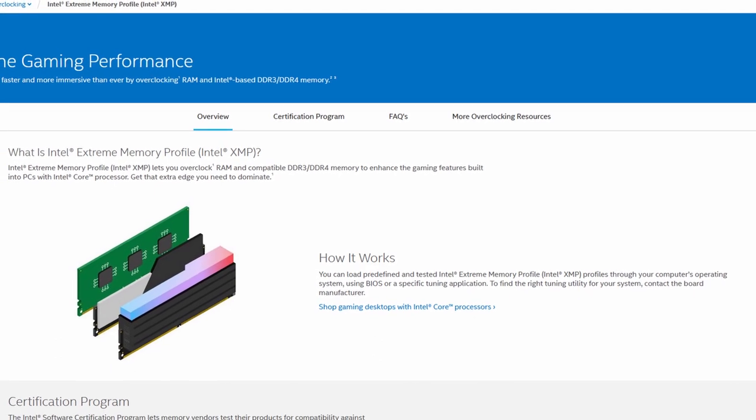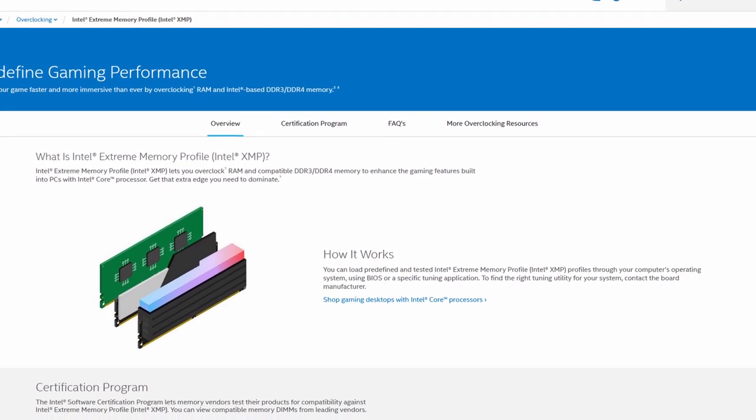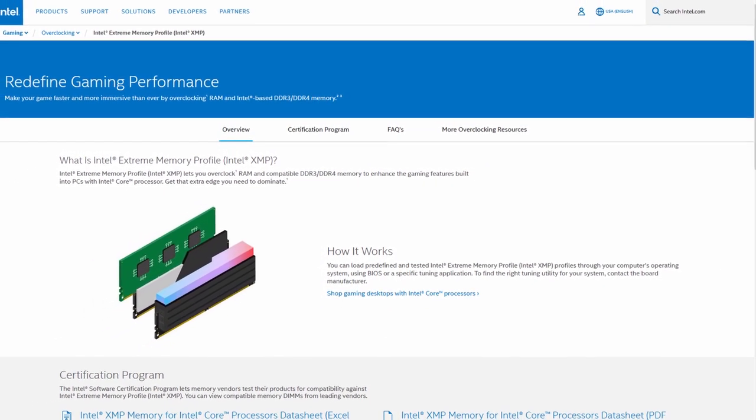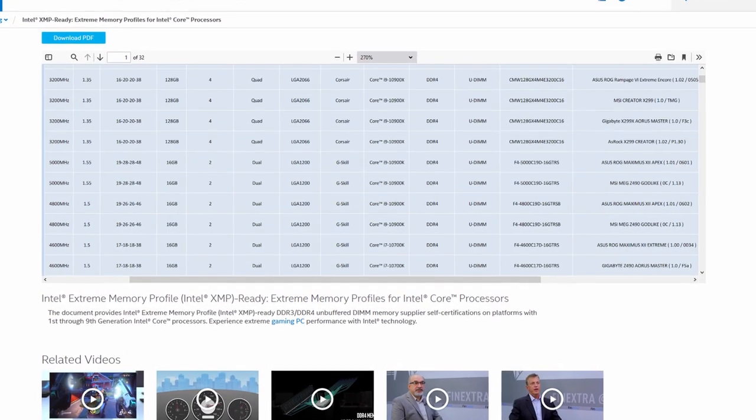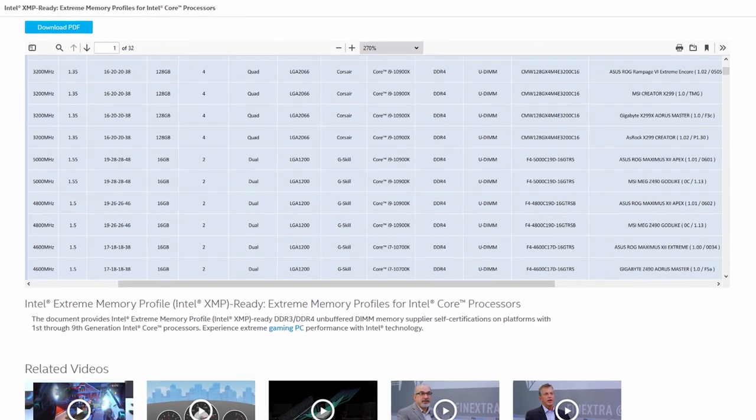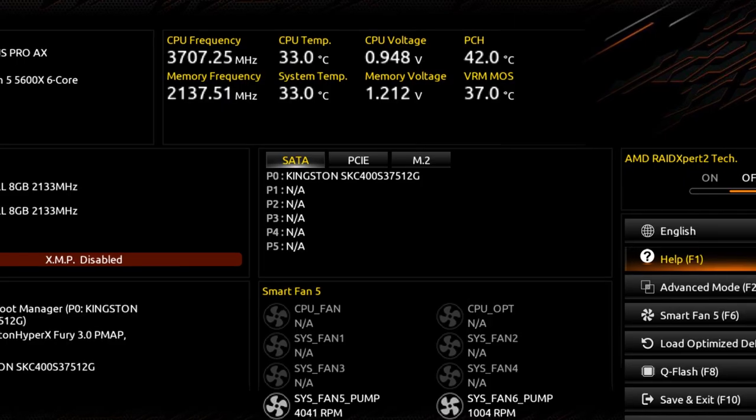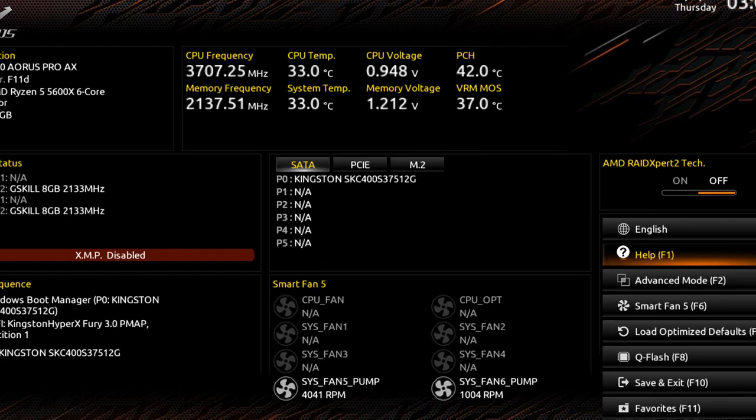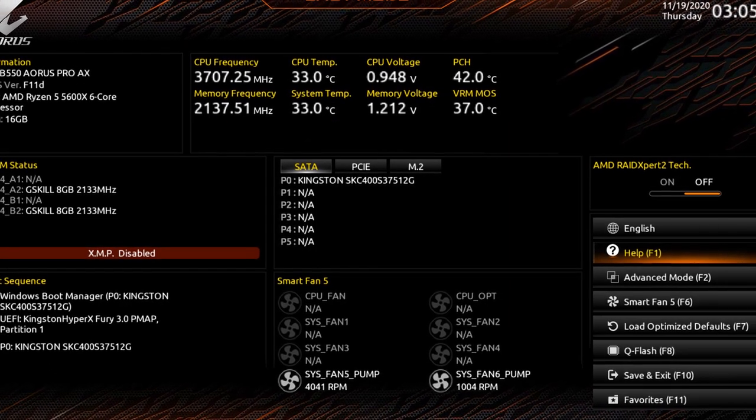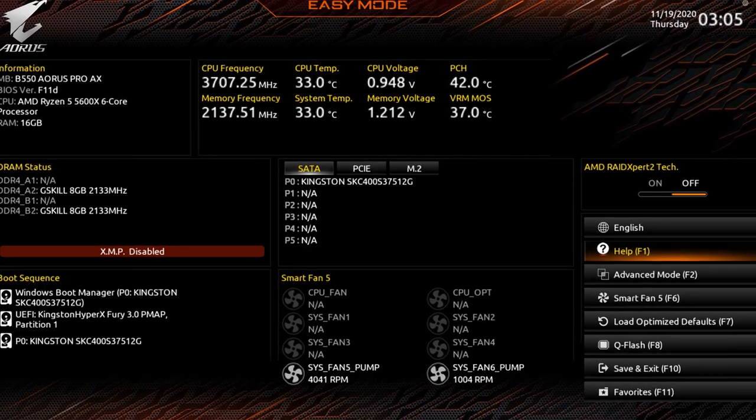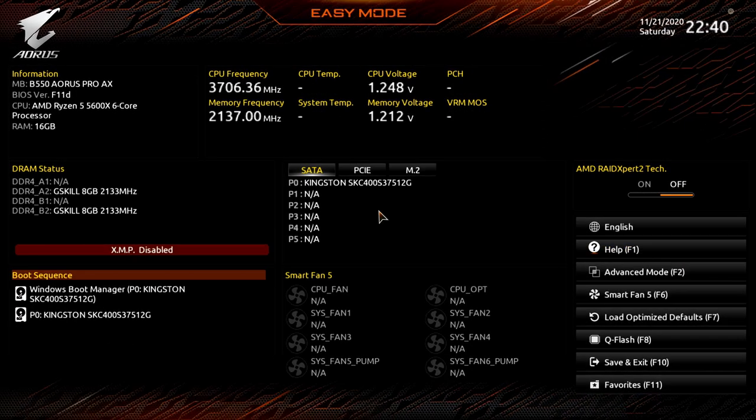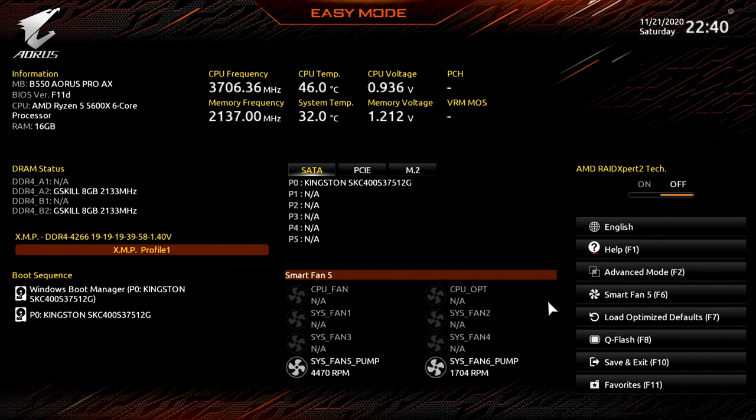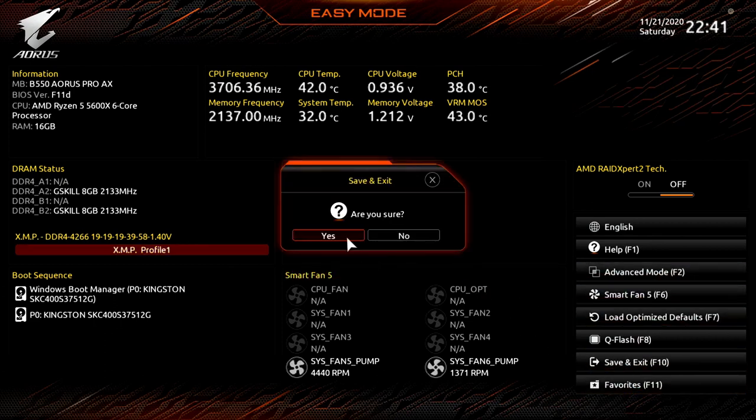XMP stands for Extreme Memory Profile and is actually an Intel technology. It allows memory vendors such as G.Skill to program higher performance settings onto the memory sticks. If your motherboard supports XMP, then you can enable the higher performance with a single BIOS setting, so it saves you from lots of manual configuration. Upon entering the BIOS, click on XMP disabled and set it to XMP profile 1, then click Save and Exit to confirm the settings.